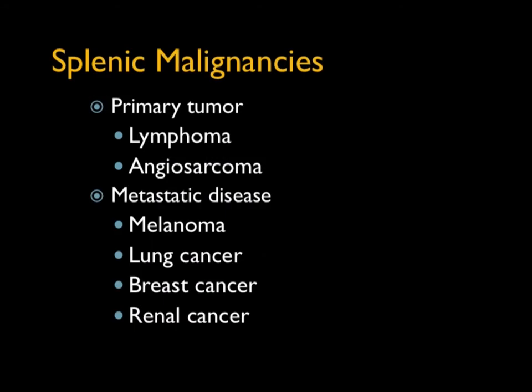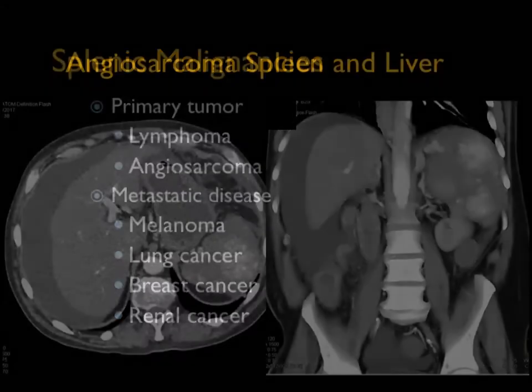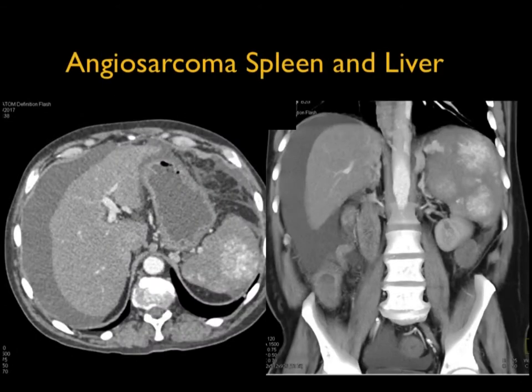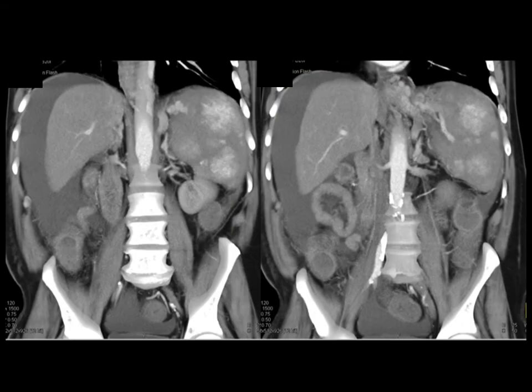Those are the benign lesions. When it comes to malignancy, you're typically going to be talking about metastasis, though there are primary tumors like angiosarcoma and lymphoma. Looking at this case with a vascular lesion of the spleen and ascites — this is more than just a simple hemangioma. These lesions are irregular, very bright, and there's an enlarged spleen. This is a very good appearance for an angiosarcoma of the spleen.